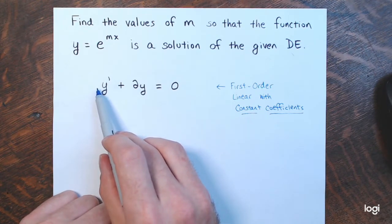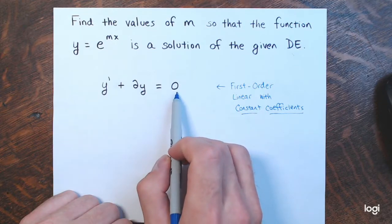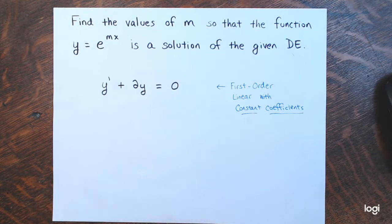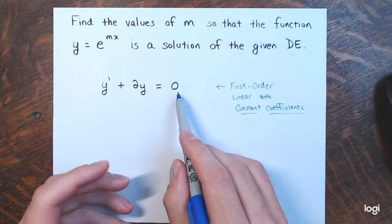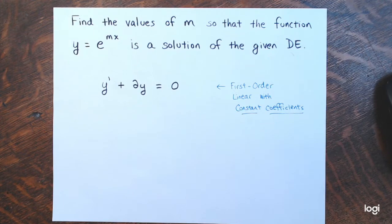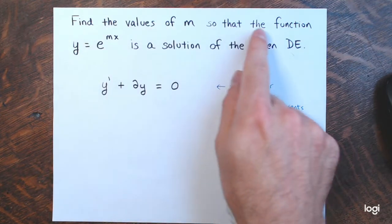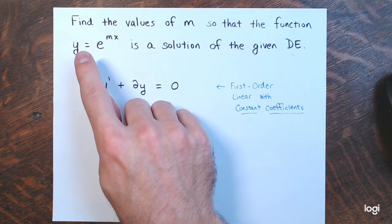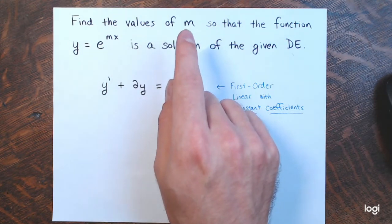The coefficient of y prime is 1, the coefficient of y is 2, and 0 on the other side. Because of the 0 on the other side, it's also called a homogeneous differential equation. When you have these nth order linear differential equations with constant coefficients, a first step in solving such an equation would be to substitute y equals e to the mx and find values of m that will satisfy it.